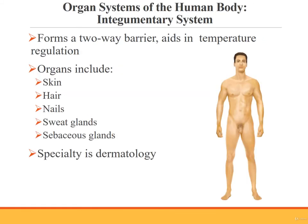There are multiple organ systems in the human body. The first one we will discuss is the integumentary system. The integumentary system forms a protective two-way barrier and assists in temperature regulation. Organs of the integumentary system include the skin, hair, nails, sweat glands, and sebaceous glands. Dermatologists care for the integumentary system. Plastic surgeons work with the system too.